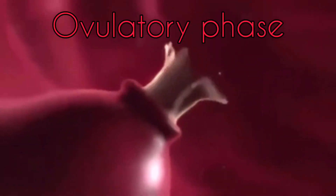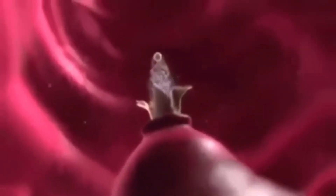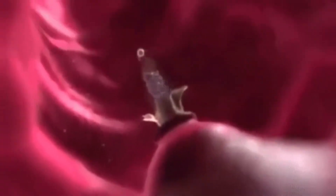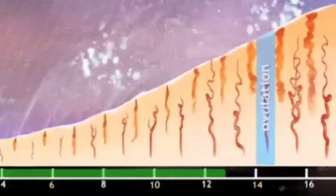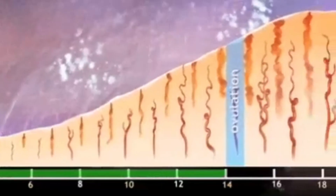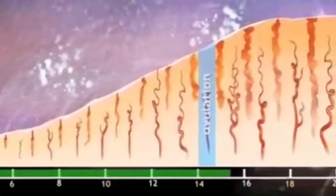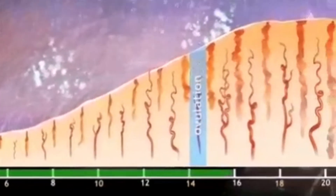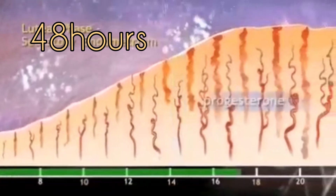The third stage is the ovulatory phase. In this phase, there is a rapid secretion of LH known as the LH surge, which induces the rupture of the Graafian follicle, leading to ovulation — the release of the ovum from the ovary into the oviduct. This stage lasts for only about 48 hours.